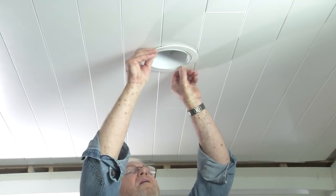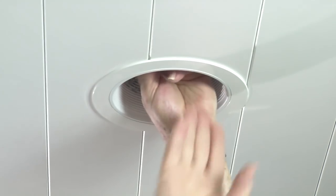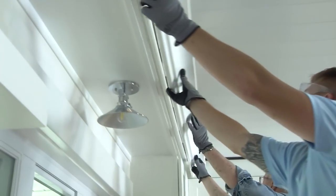With the ceiling planks up, we replace the light fixtures and reinstall the crown molding.